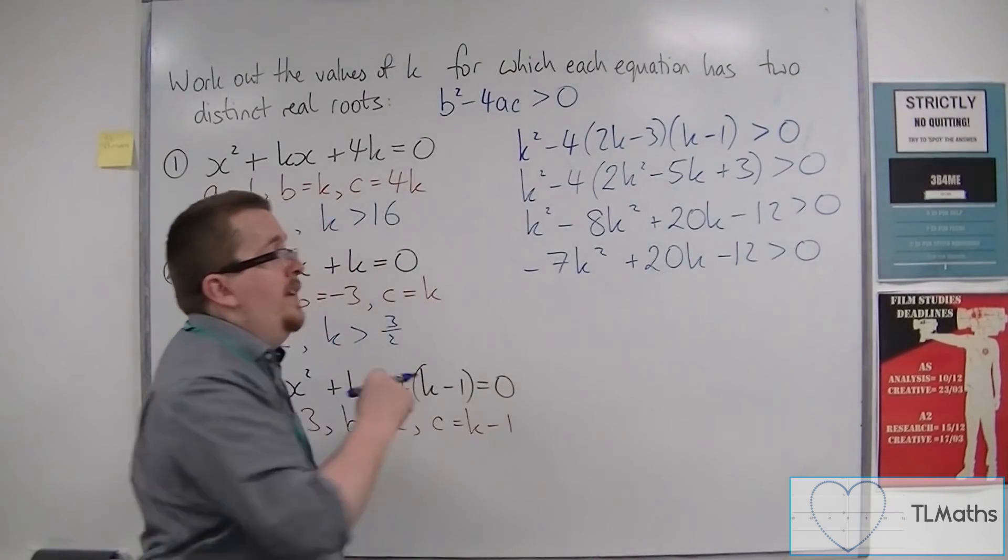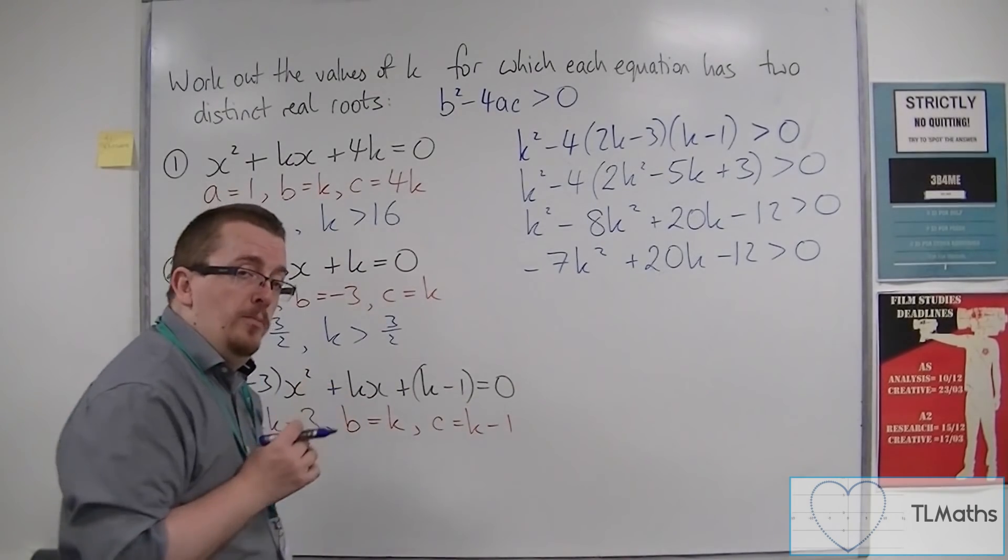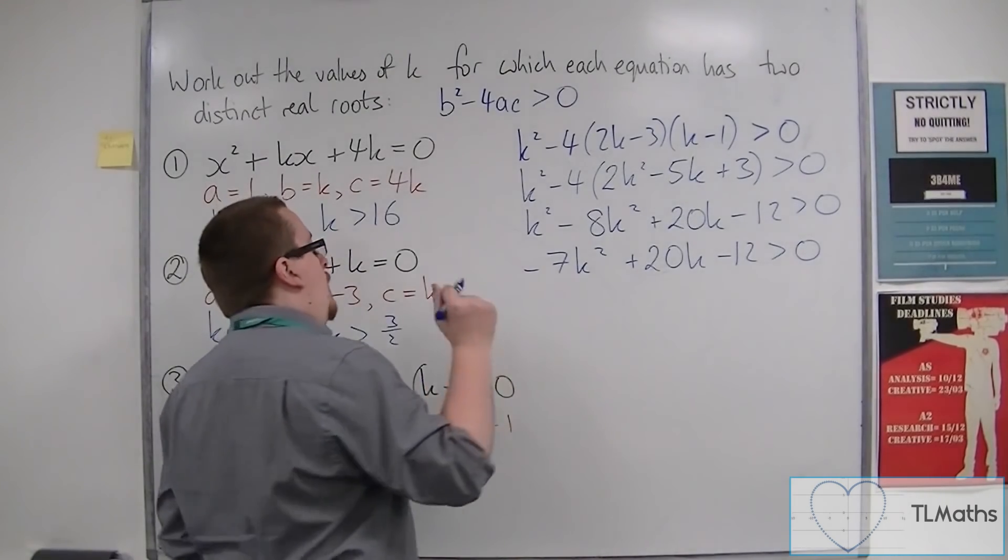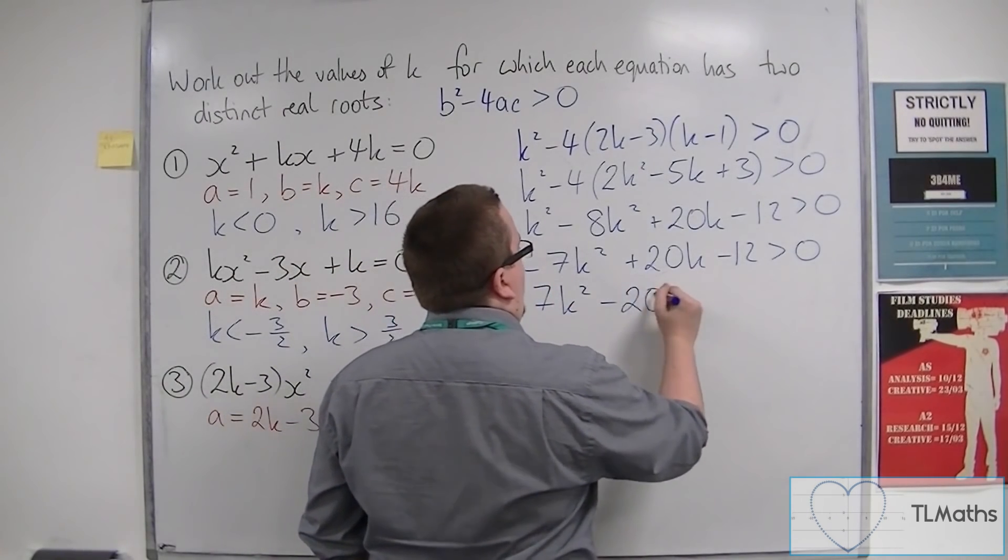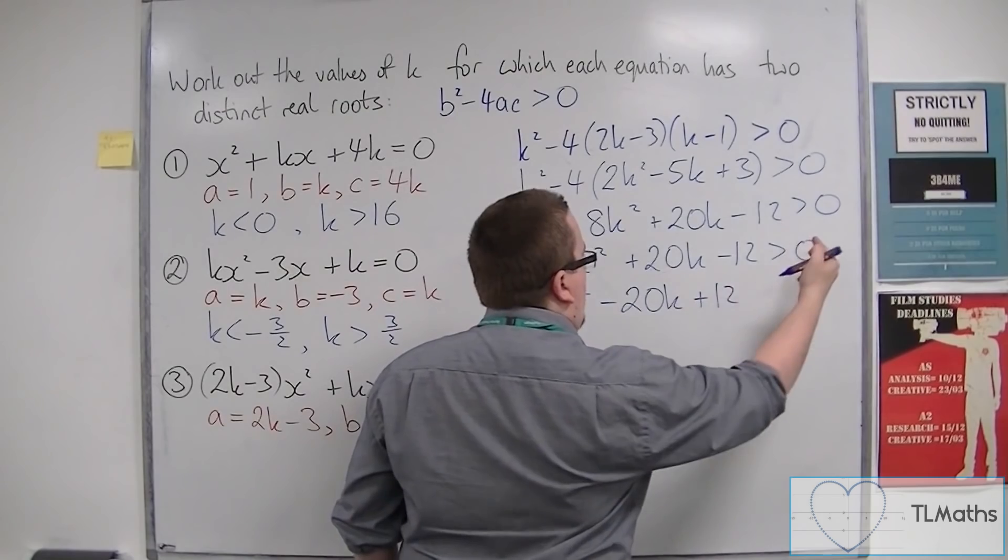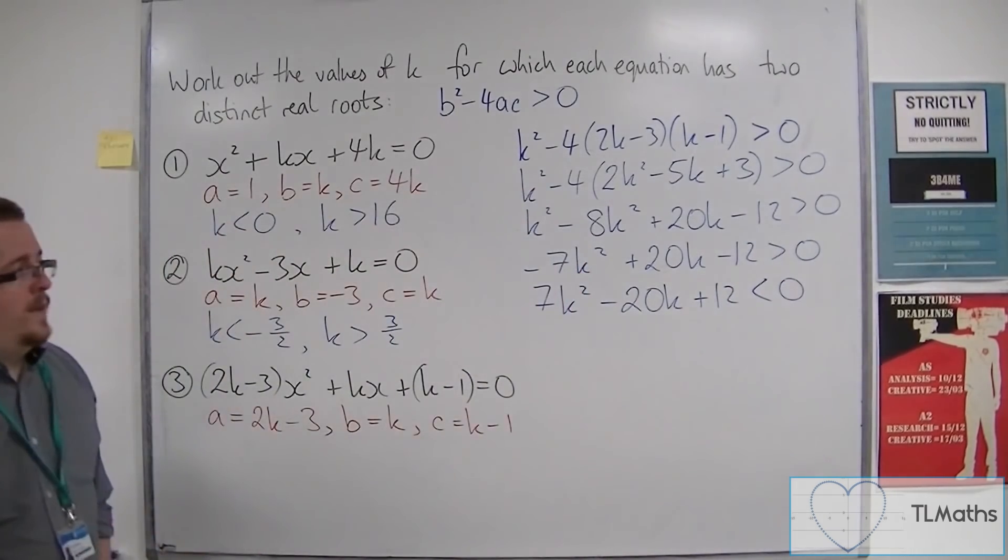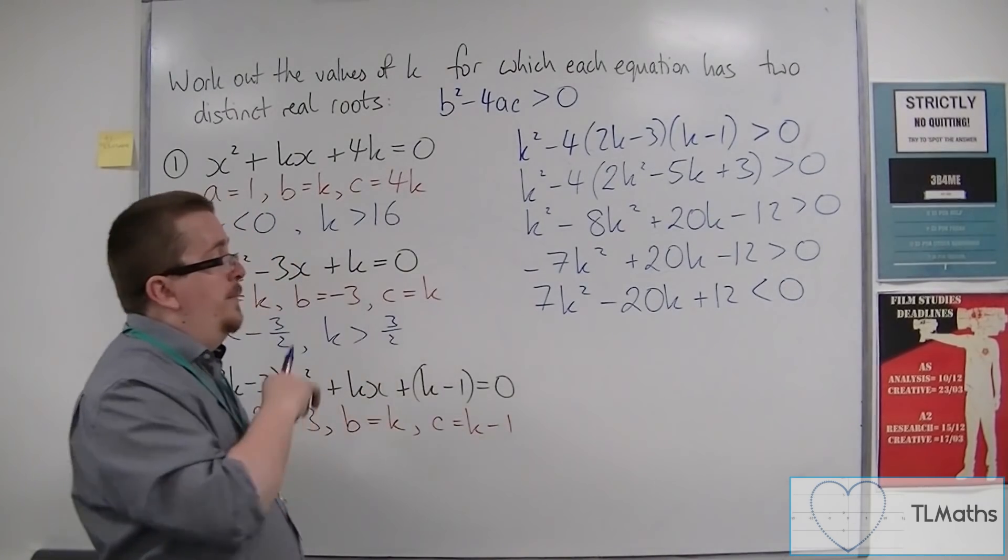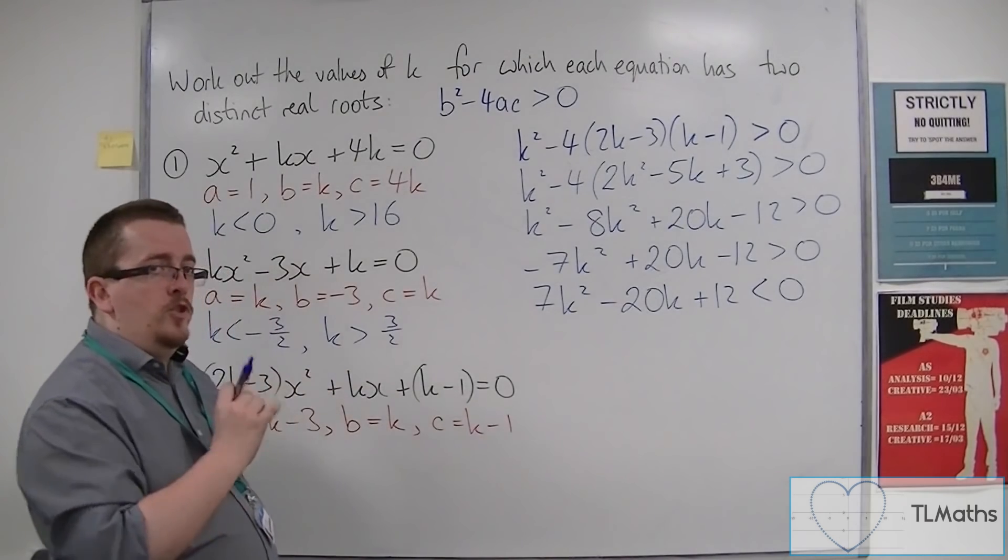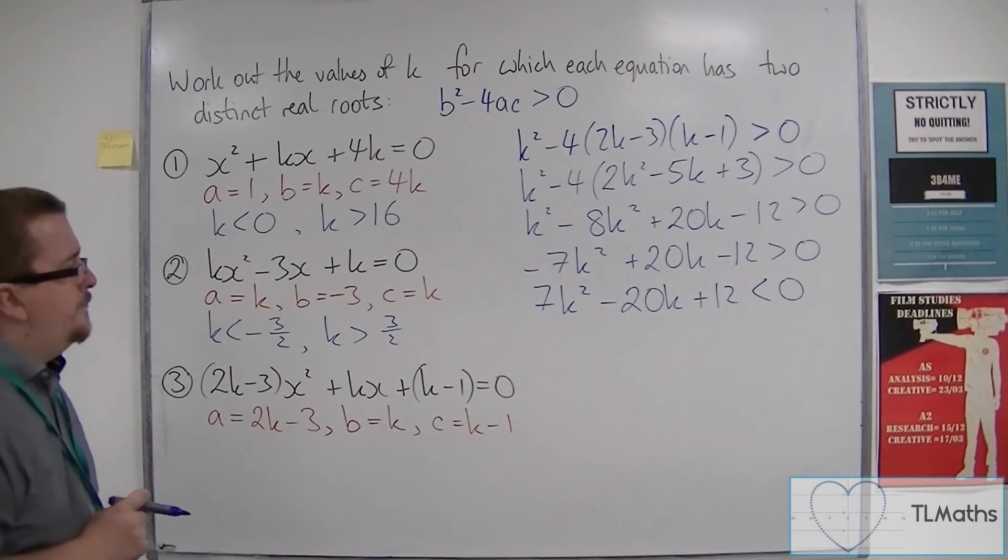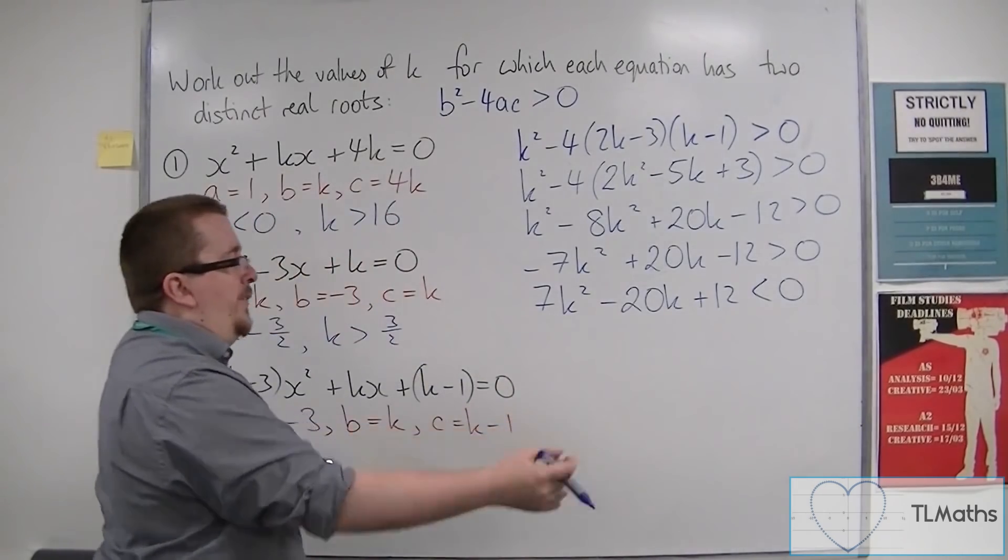Now, in its current form, it's quite difficult to work with. So I'm going to multiply through by minus 1. And what happens when you multiply through by minus 1? It changes the direction of the inequality symbol. OK? So I can change the sign of each of the elements, each of the terms. But I must make sure that the inequality symbol changes around as well.